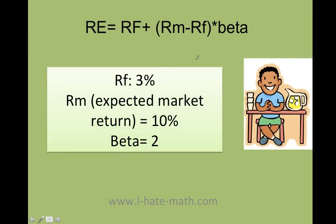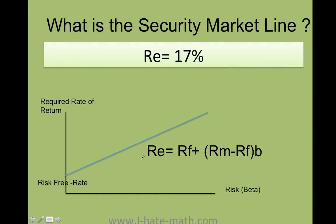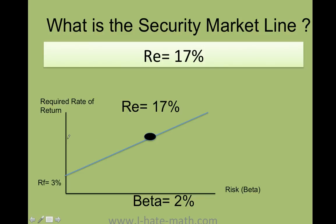Let's do a problem with numbers. Billy tells you the T-bill rate is 3%, the expected market return is 10%, and beta is 2. To find the required rate of return, plug in: RF is 3, RM is 10, RF is 3 again. First, 10 minus 3 equals 7; then 7 times 2 equals 14. So the required rate of return is 17%, and you can plot this on the security market line.